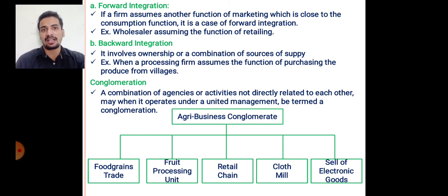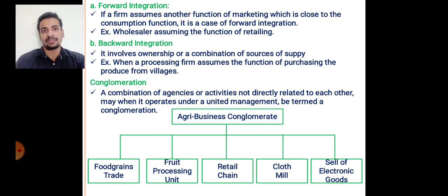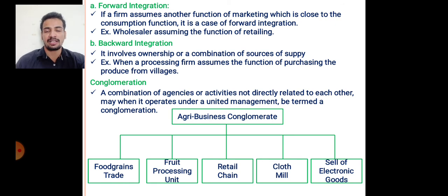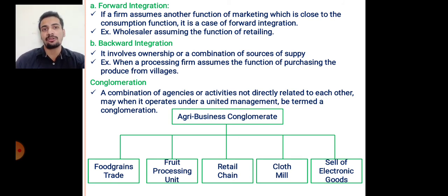In the marketing channel of wholesaler, retailer, and consumer: if a retailer does the function of a wholesaler, it will be backward integration. The last type of market integration is conglomeration. Conglomeration is a combination of agencies or different activities not directly related to each other, which operate under a single management. For example, one conglomerate agribusiness firm doing food grain trading, fruit processing, a retail chain, a cloth mill, and electronics — different businesses under single management that are not related to each other. These are known as conglomeration.